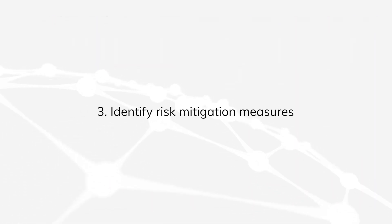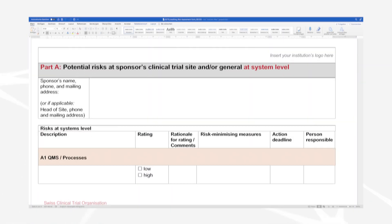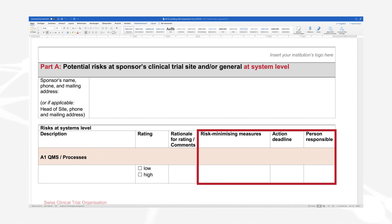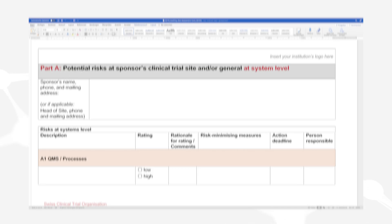Step 3: Identify risk mitigation measures. Look at the precautions which are already in place — these are your risk mitigation measures. Evaluate each risk and decide whether the existing measures are adequate or whether additional ones need to be implemented. List all measures, also defining deadlines and responsibilities.